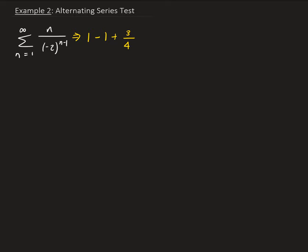When n is 4, we get 4 on top, and on the bottom we have minus 1 to the third power, so that's going to give us minus 4 eighths, which reduces to minus 1 half. So just from the first few terms, we can get an idea that this perhaps is an alternating series.